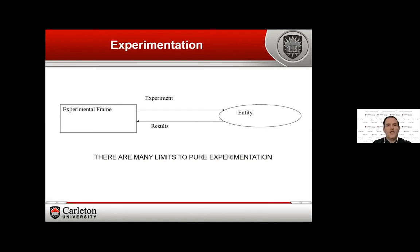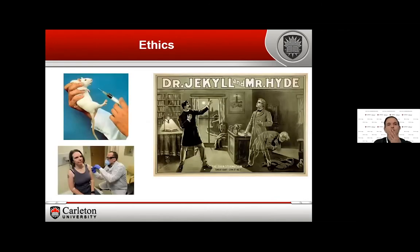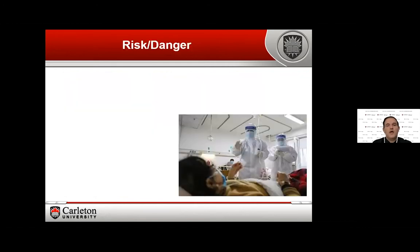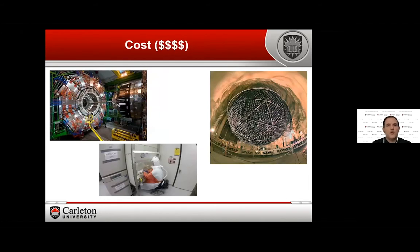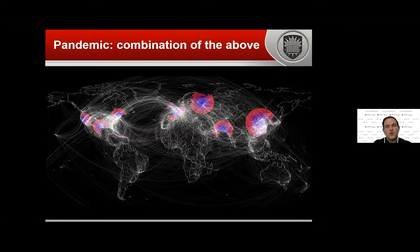The big problem is that pure experimentation is very limited. One of the main reasons is ethics — in the case of a pandemic, we cannot infect people to see what happens. It's also risky or dangerous to conduct experiments. Another major issue is cost: building a Large Hadron Collider or a Neutrino Observatory costs hundreds of millions of dollars. Equipment for COVID analysis is also expensive. A pandemic combines all of these issues — it's risky, expensive, and unethical to experiment directly. So experimentation alone is not a good solution for a big problem like this.